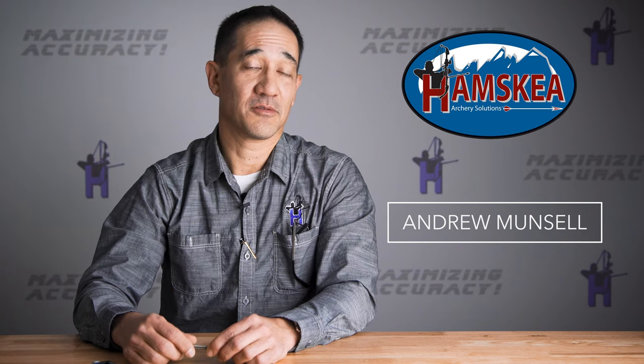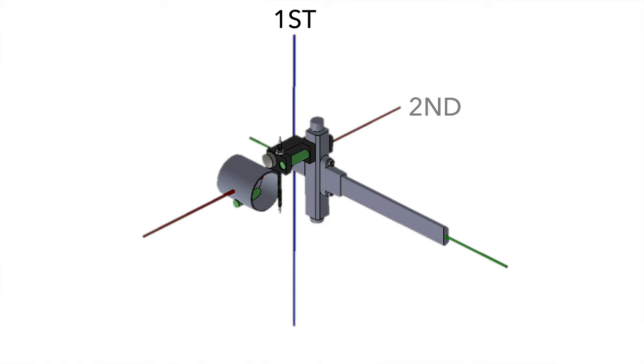Hey folks, thanks for joining another Hamski educational video. I'm Andrew of Hamski and we'll be going through third axis today — some simple concepts to help you understand what that is, how an error can get introduced into your sighting system, and why you should care as a bow hunter or archer. We'll be talking about three axes and their relative orientation to each other, similar to the XYZ coordinate frame from physics or math class, applied to your bow sight.